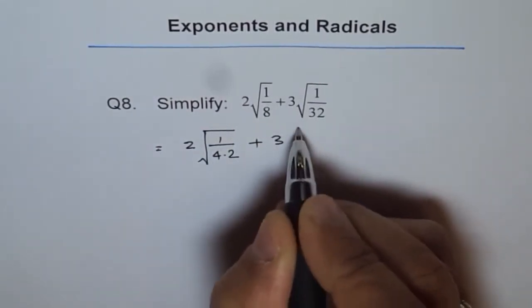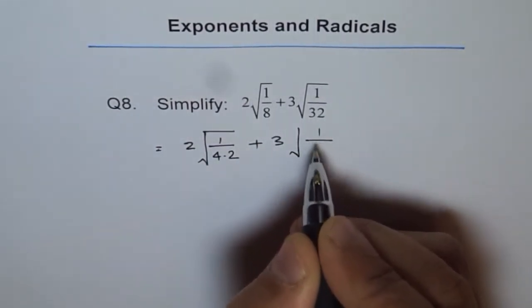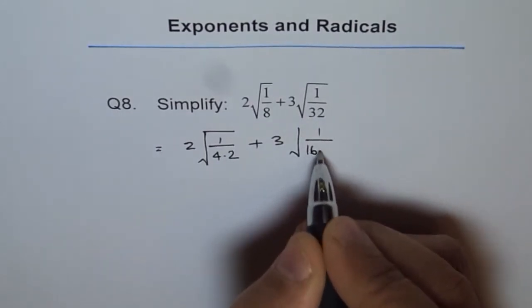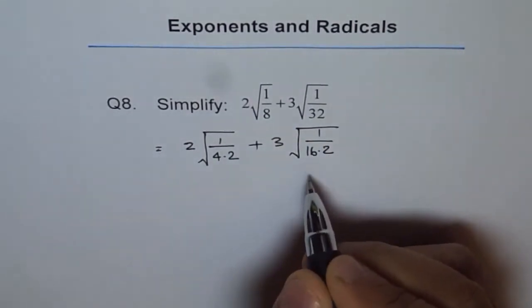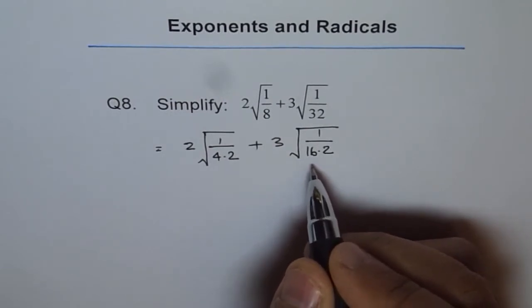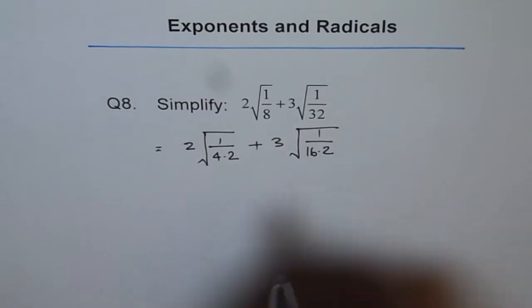Plus 3, and 32 could be written as 16 times 2. Why am I writing like 16 times 2? Because 16 is the perfect square of 4, correct? I am not writing 8 times 4 this time. I am writing 16 times 2.